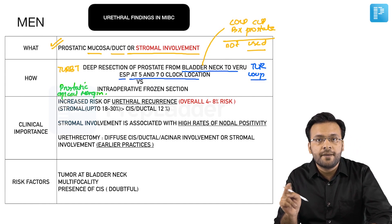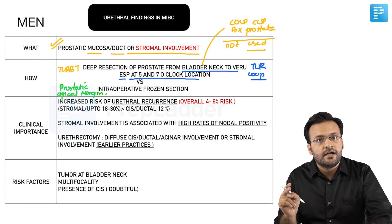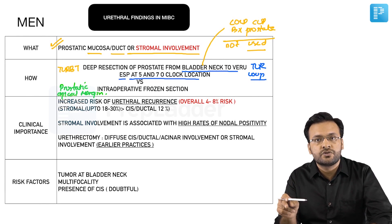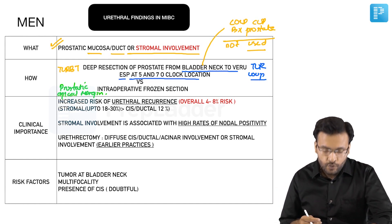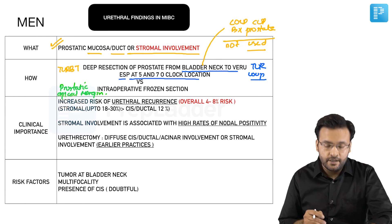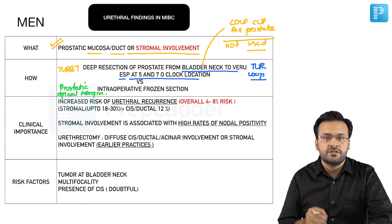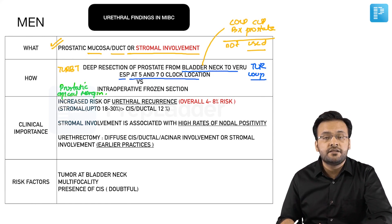During TURBT you take biopsies from the prostatic urethra up to the verumontanum, whereas during radical cystectomy after resection of the prostate, the prostatic apical mucosal urethra is sent for evaluation. The clinical importance of urethral involvement in patients with bladder cancer is that there is an increased risk of urethral recurrence in the residual urethra left after cystectomy.